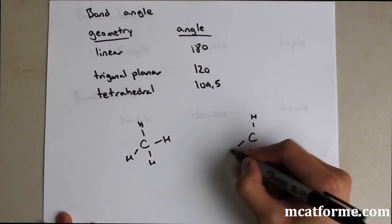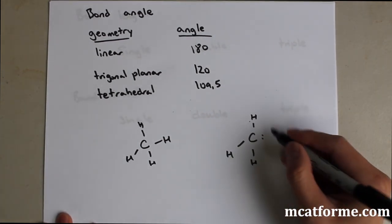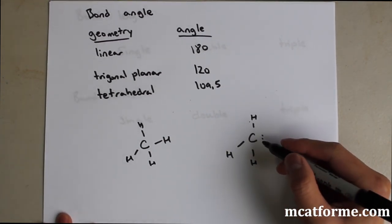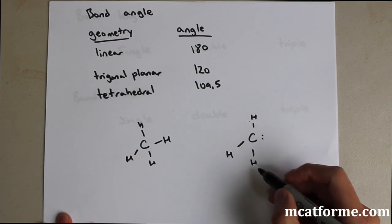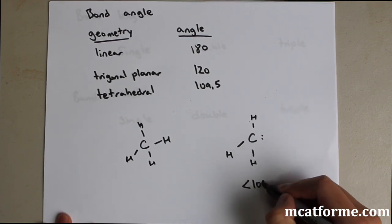But what if one of these were substituted for a lone pair? For some reason now it has a lone pair, what do you think that bond angle would be? So for our case, we don't need to know what the exact bond angle is, but we know it's less than 109.5.